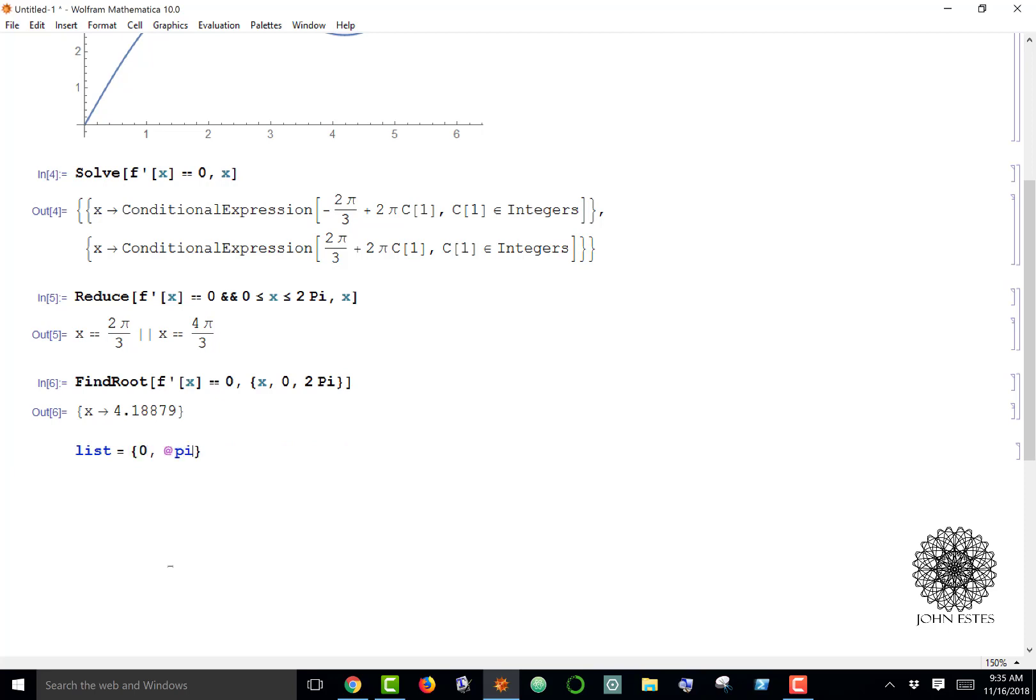I'm going to call my list 'list'—you can call it anything you want—and I'm going to put in 0, 2 pi over 3, 4 pi over 3, and 2 pi. There's my list. Now what I want to do is find the function values of that list to see which one is the highest and the lowest.